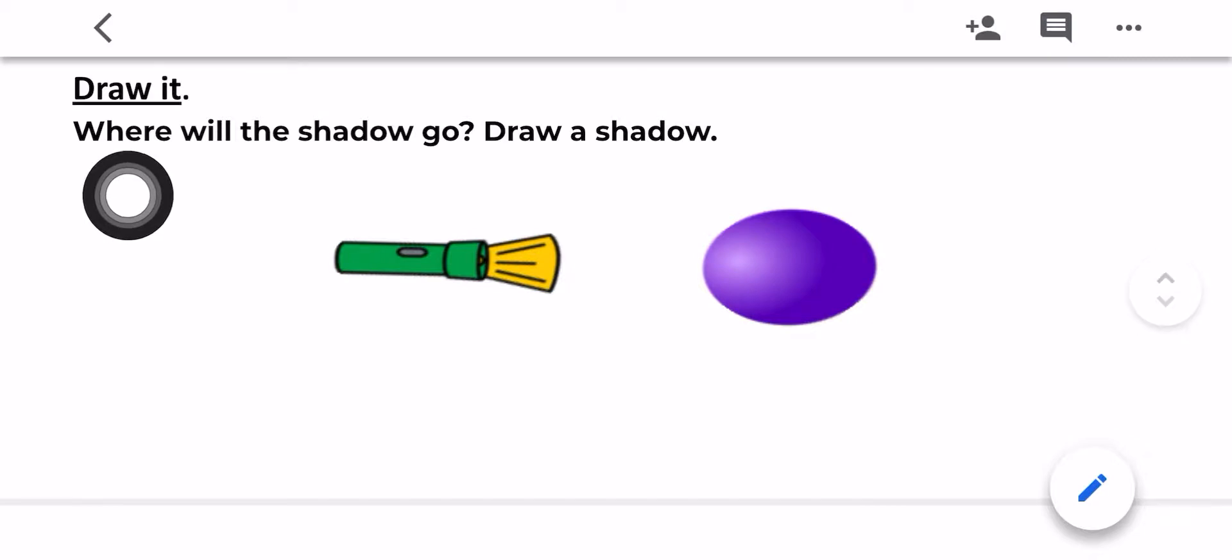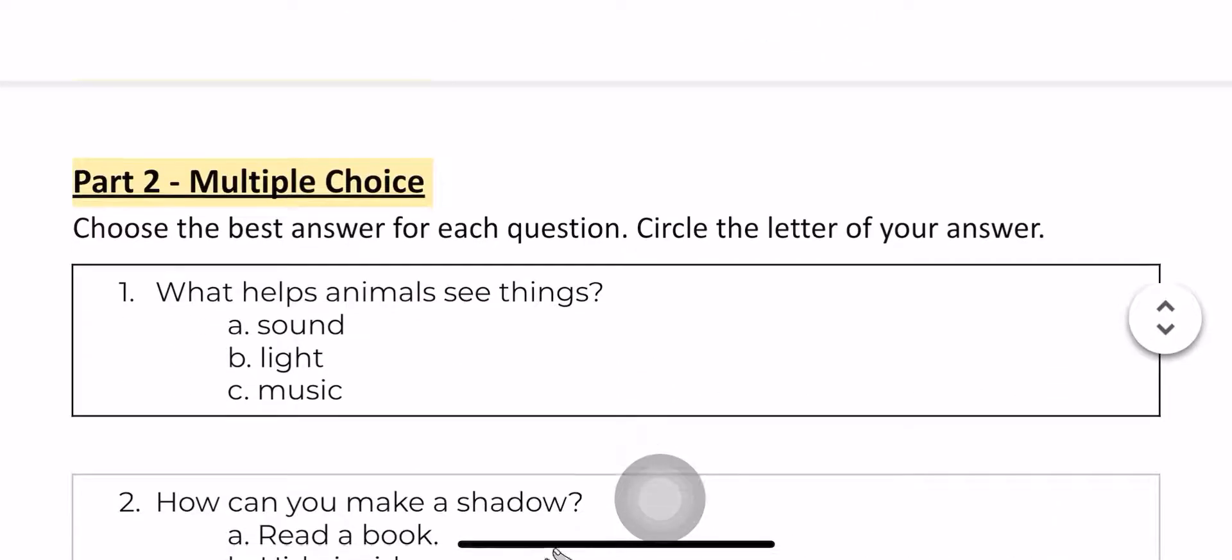Draw it. Where will the shadow go? Draw a shadow. So if you're going to put the light in front of this ball, where will the shadow go? You're going to draw where the shadow goes. You can pause it and answer it. Let's go to the next.